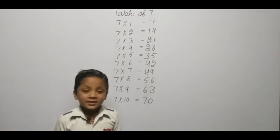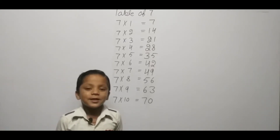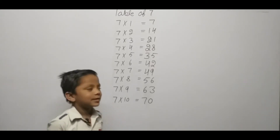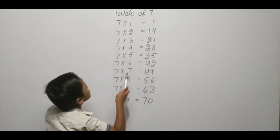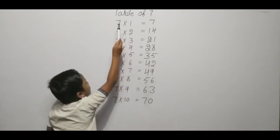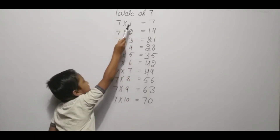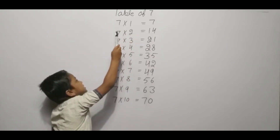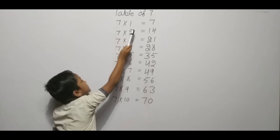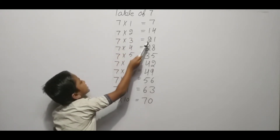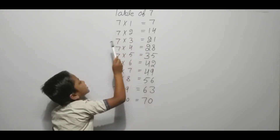Hello friends, we are learning table of seven. Seven one ja seven, seven two ja fourteen, seven three ja twenty-one, seven four ja twenty-eight, seven five ja thirty-five.